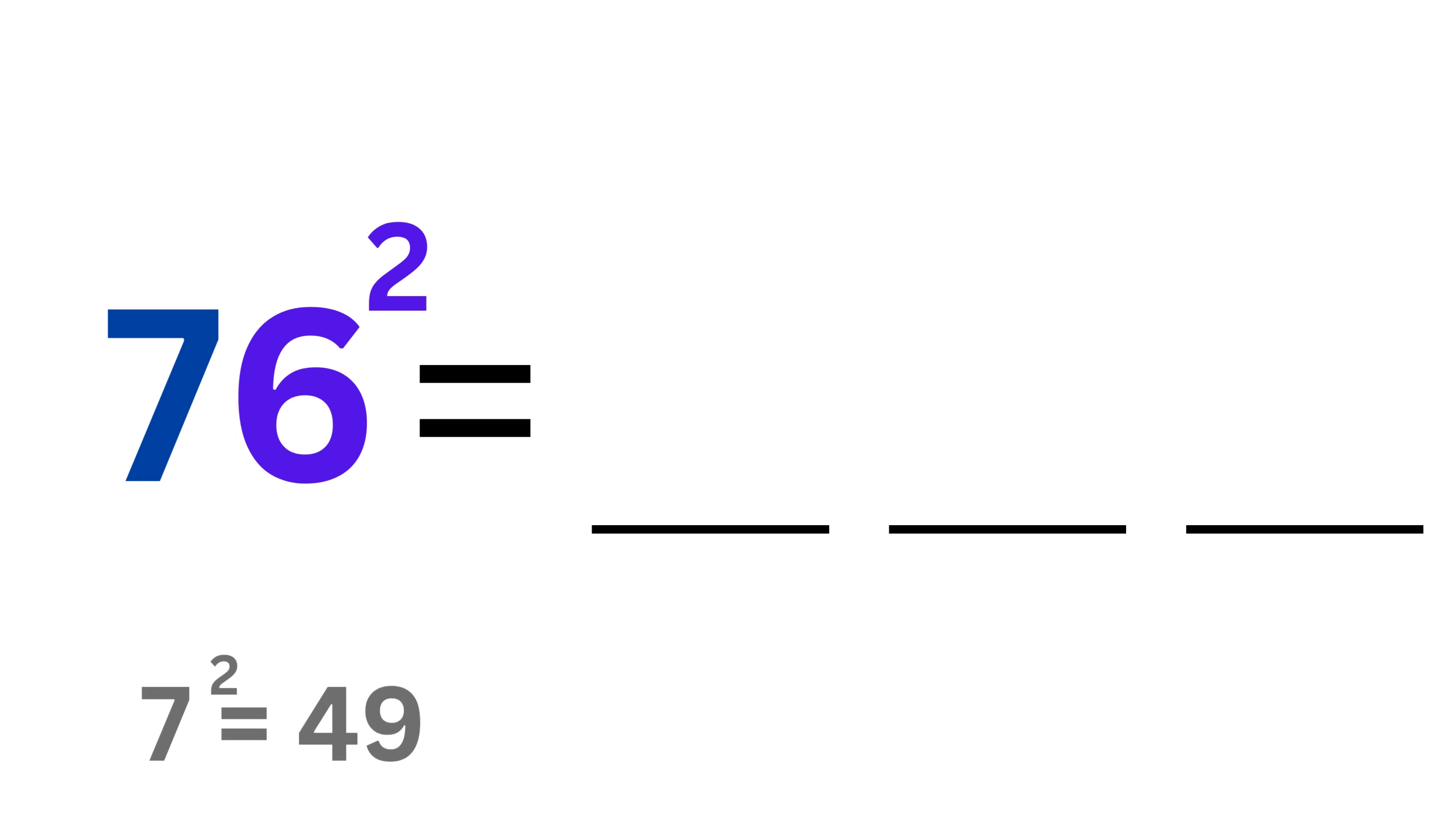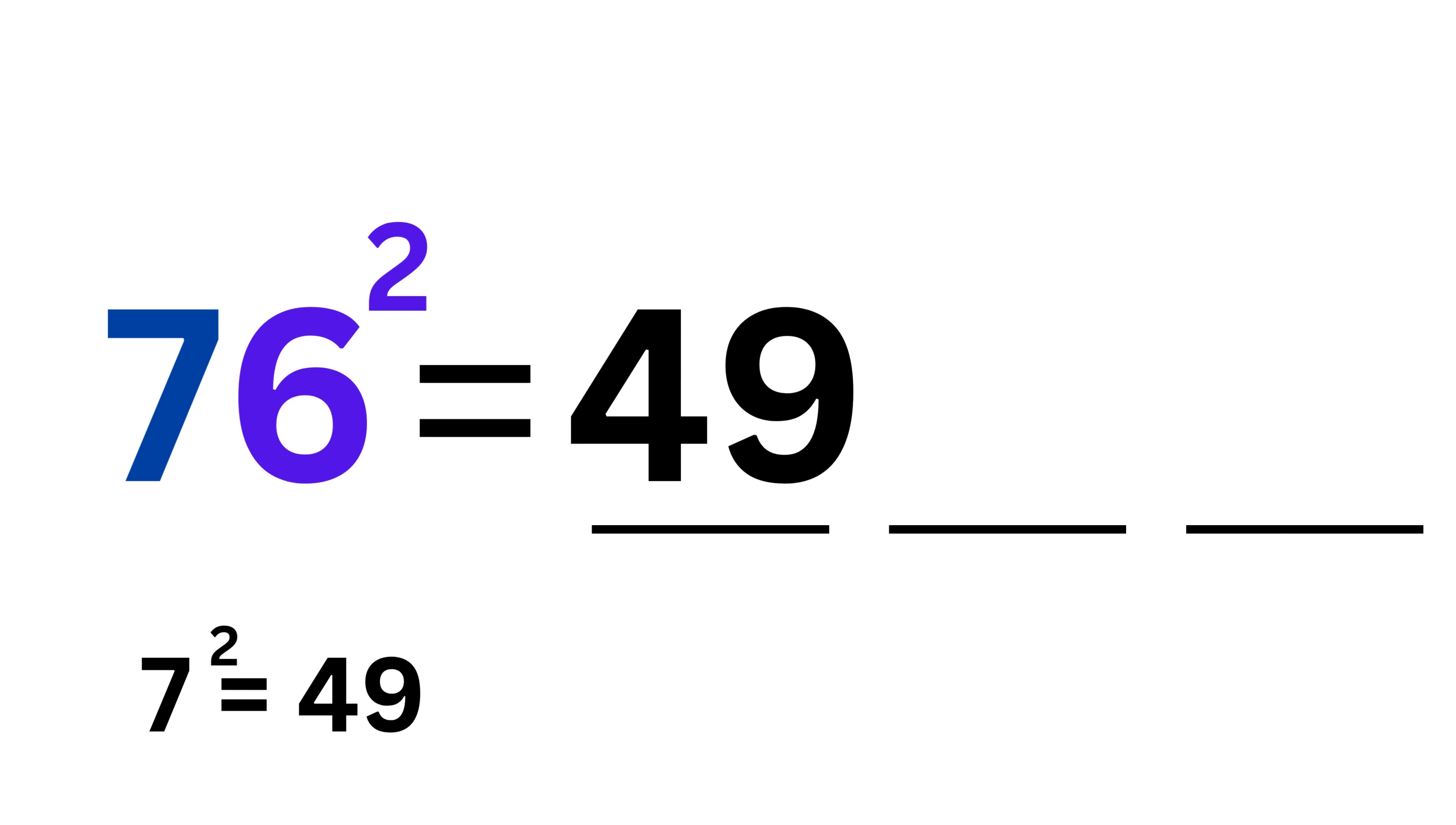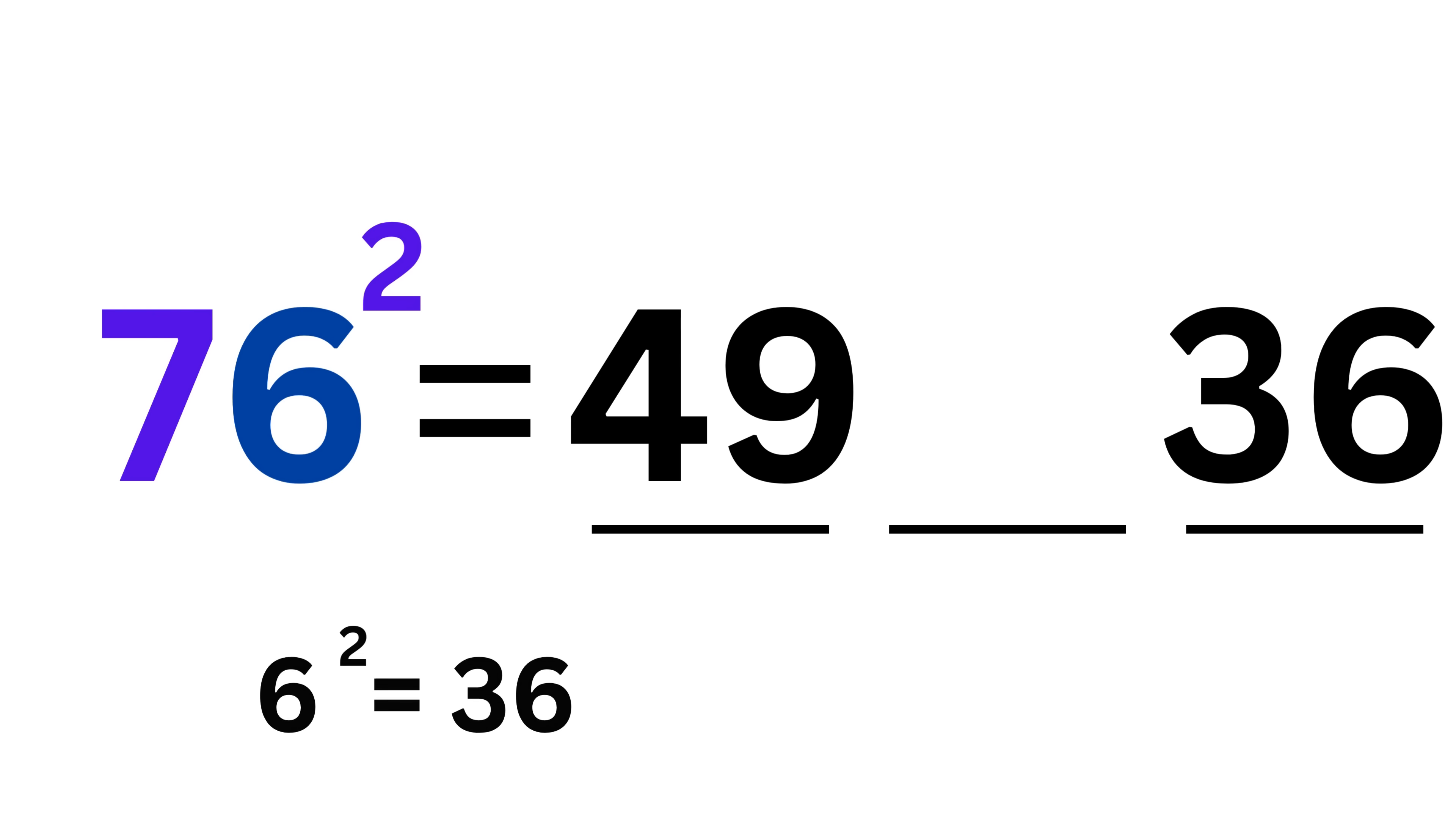Now let's try a boss level number. 76 squared. We will have carries on both sides. Left, 7 squared is 49. Right, 6 squared is 36. Middle, 7 times 6 times 2 is 84.